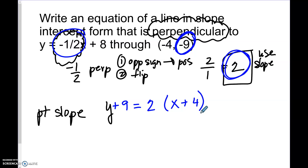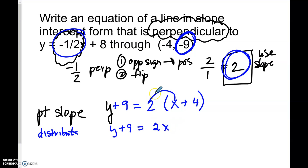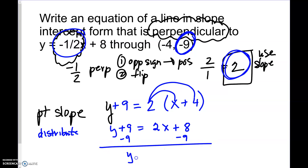We need to distribute. Two times x gives two x, and two times four gives eight — don't forget that second one. Now we need to move the nine, and we do the opposite, so we subtract nine. Eight minus nine is negative one. So y equals two x minus one. The y-intercept of the perpendicular line is negative one, and the slope of the perpendicular line is two.